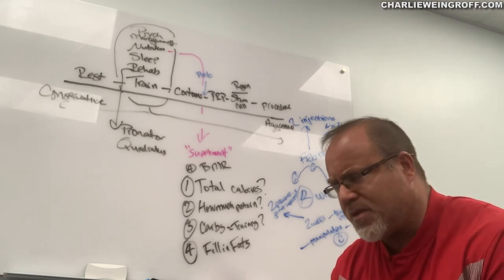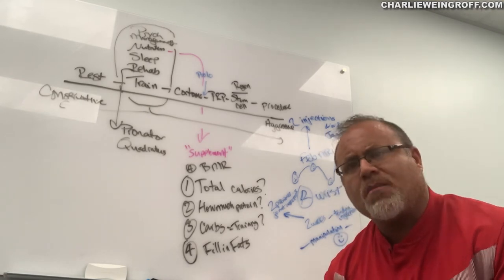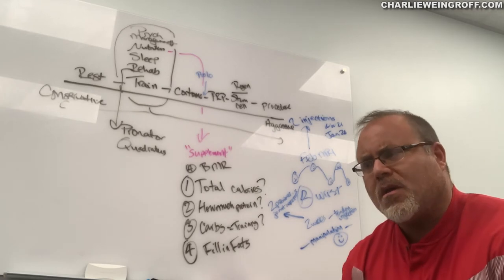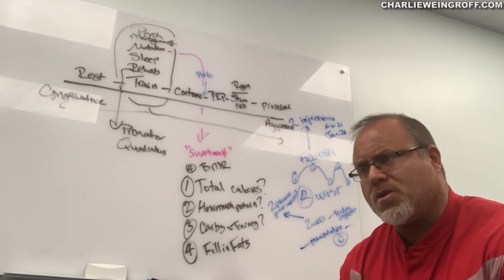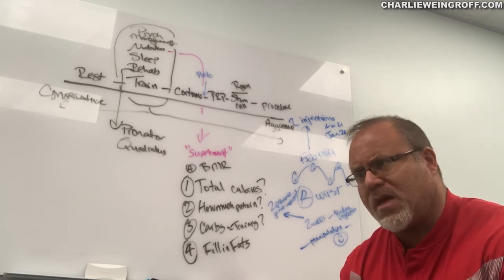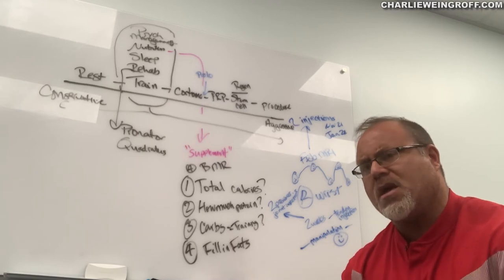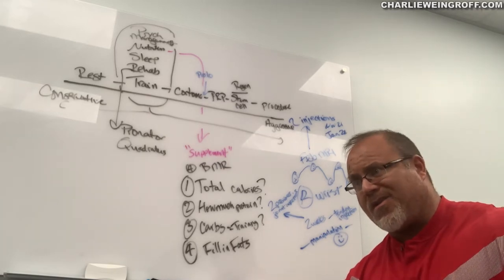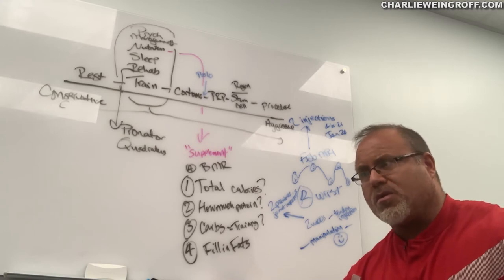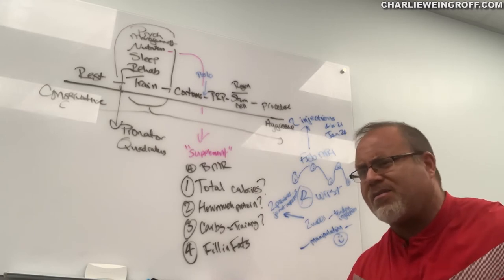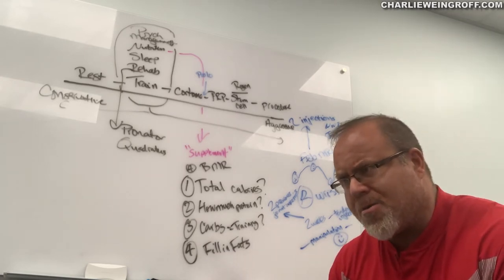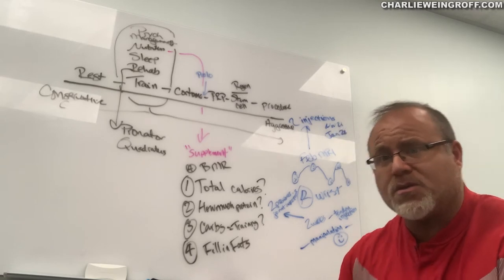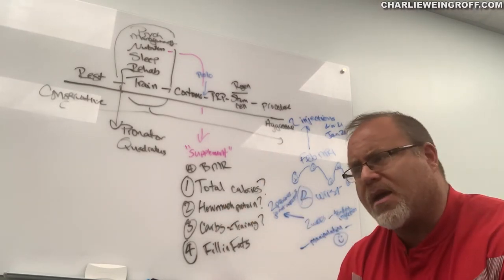Number one, tendinosis on the extensor carpi radialis. Zero symptom provocation with anything. Number two, slight fraying of the TFCC. We kind of harp on these things because I don't know of any technique that can directly improve or restore the cartilage. Slight fraying doesn't really sound like a big deal. It shouldn't be something that's always a problem, but if it is, then obviously you start to see we did talk about some things.